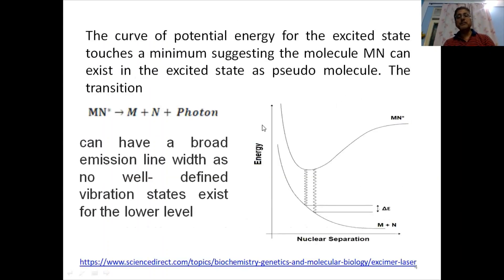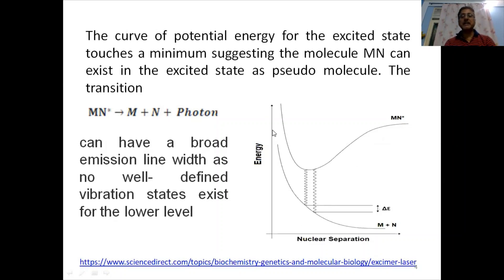Let us consider a potential energy curve to understand the laser. If M and N, two dissimilar molecules or atoms, come together to make a pseudo-molecule in the excited state — for example MN star — then the potential energy of MN will be such that in the excited state they make a pseudo-molecule because of the associative state, while in the ground state they are highly repulsive and exist in the dissociative state.